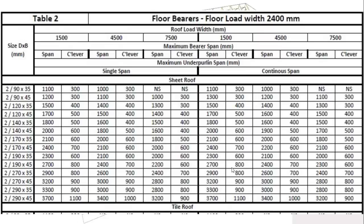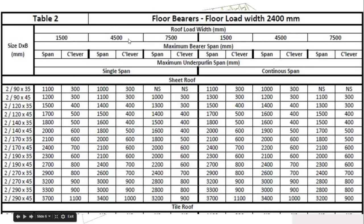I'm going to go to table 2, which is the one I need for a floor load width of 2,400, so that works out for me. I'm then going to look at my roof load width — I had 1,500 and my roof load width is 1,800, so I have to go for a 4,500 roof load width. I want to try and work with continuous span members, so I'm going to go with this side of the table and this column.